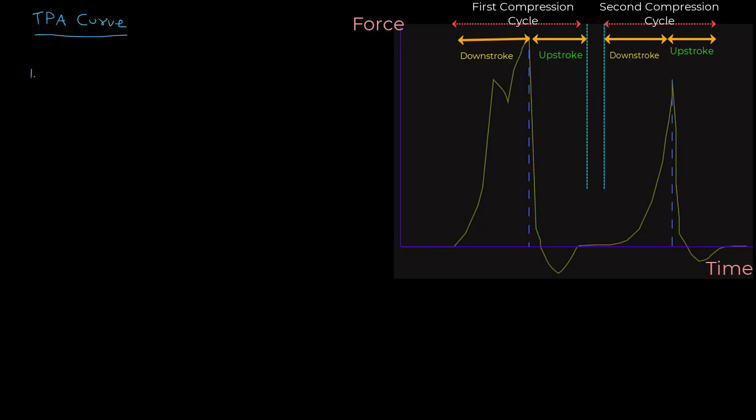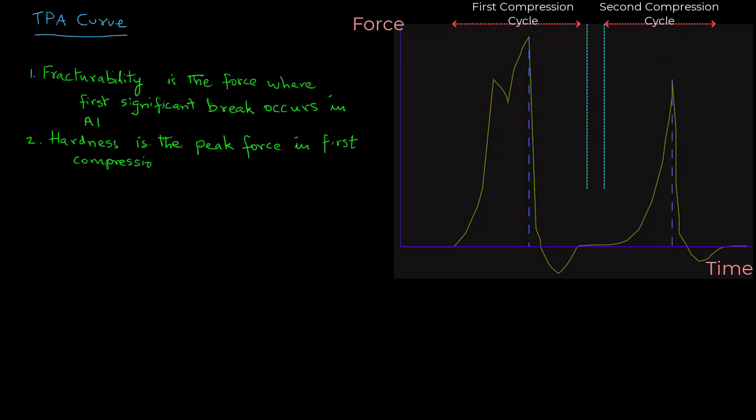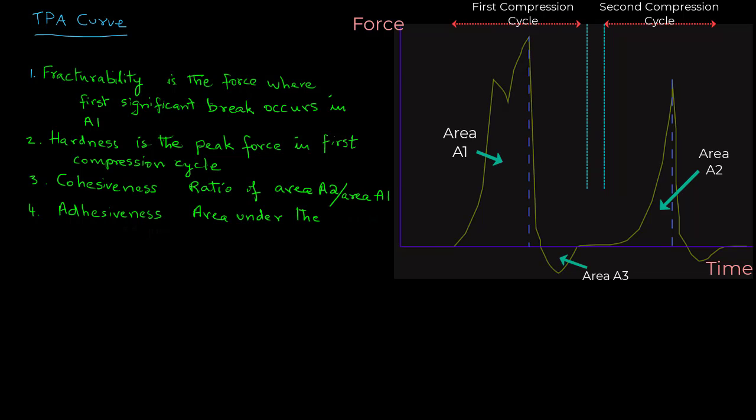From this texture profile, one can obtain several attributes. The first item we can get from this plot is fracturability, which is the force where the first significant break occurs in the curve for the first loading. Hardness is the peak force in the first compression cycle. Cohesiveness is obtained by taking the ratio of area under the curve for A2 divided by A1. Adhesiveness is another attribute that we can get by determining the area under the curve in region A3.